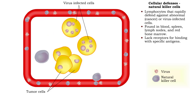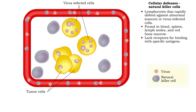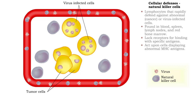Natural killer cells do not have receptors for binding with specific antigens. However, they are able to kill tumor or virus-infected cells that display abnormal major histocompatibility antigens.